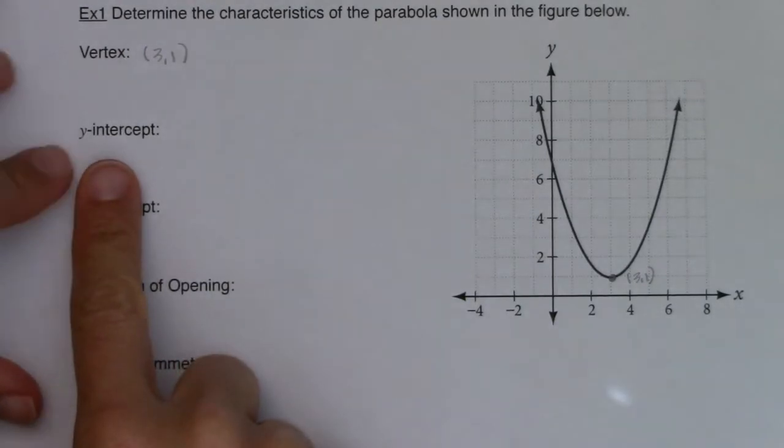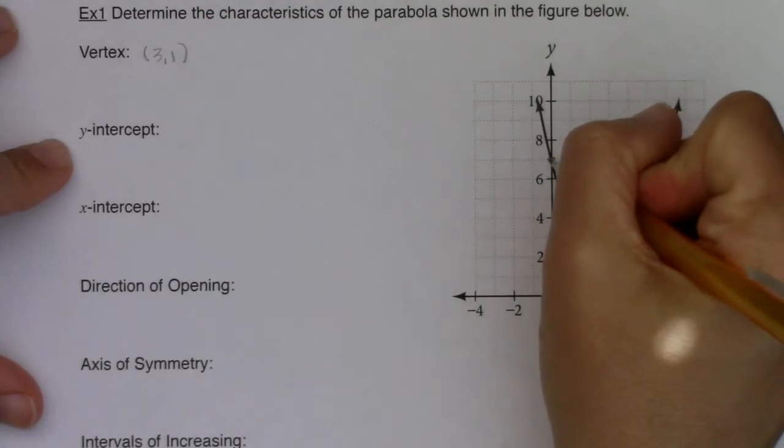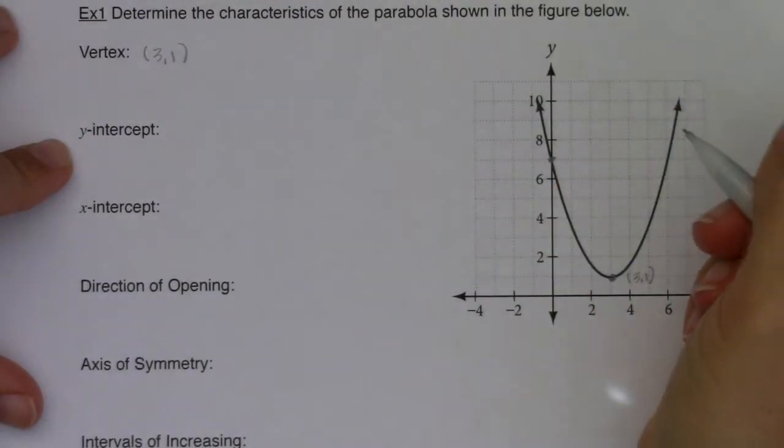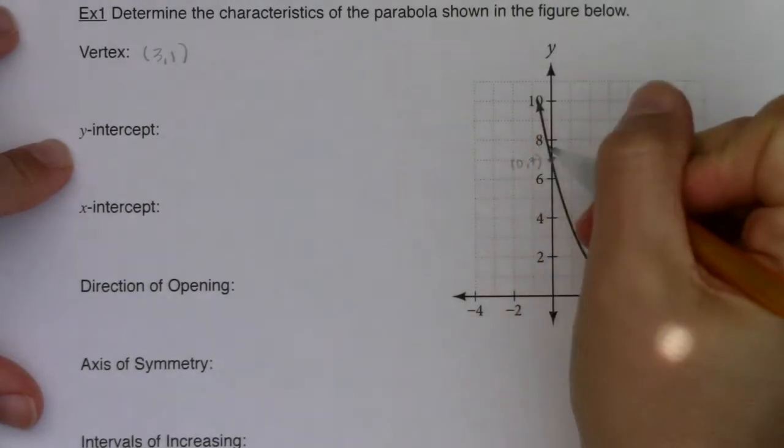Now the y-intercept is where my graph crosses the y-axis. And if I look on the graph, it looks like the graph is crossing the y-axis at this ordered pair, which looks to be about 0, 7.